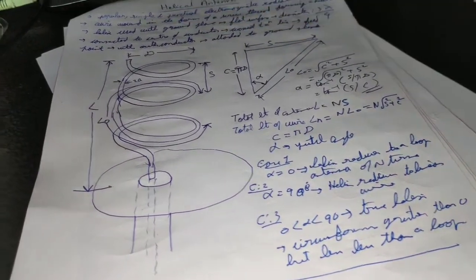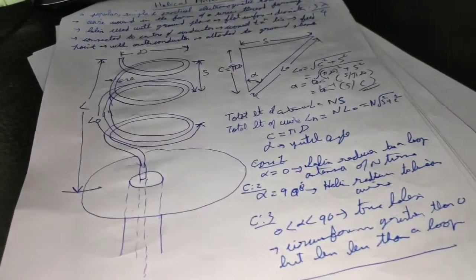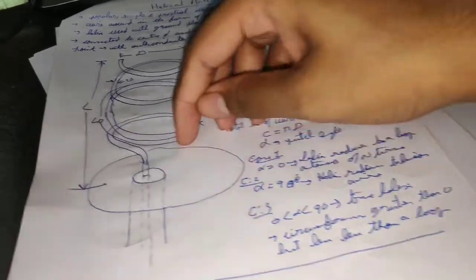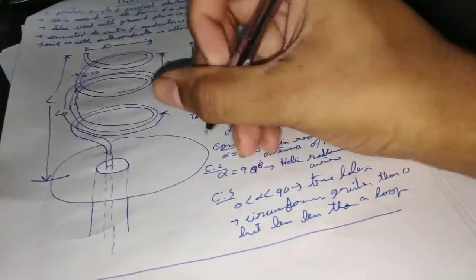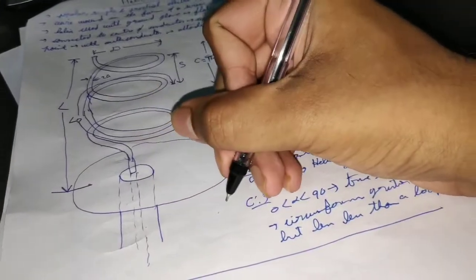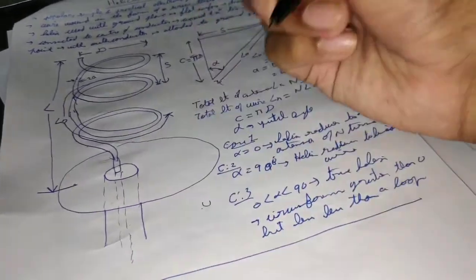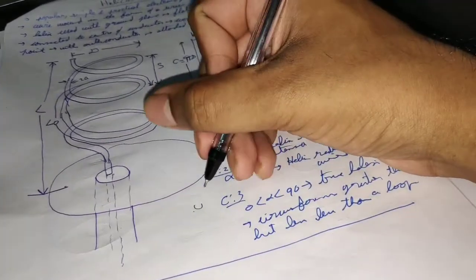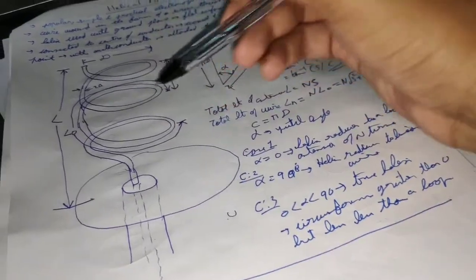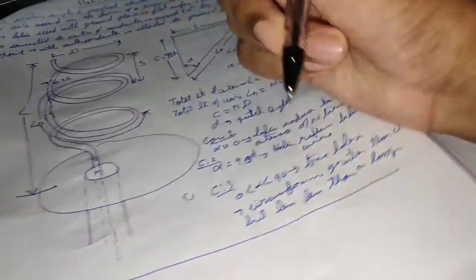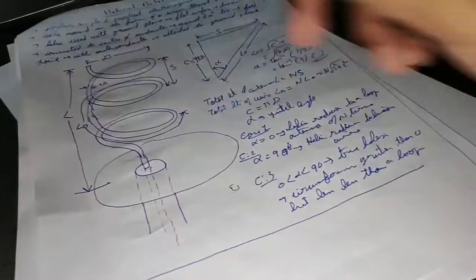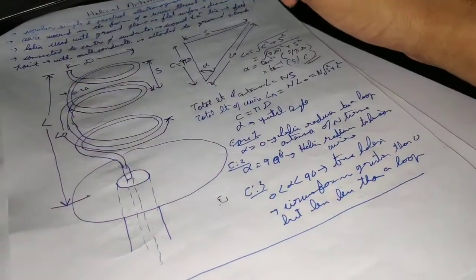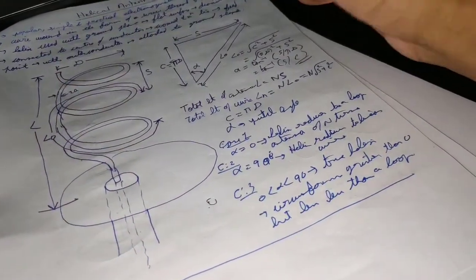To clarify the true helix condition: the circumference is greater than zero (it can't be a dot) but less than a full loop — you won't get a complete loop. This is what happens when α lies between 0° and 90°.